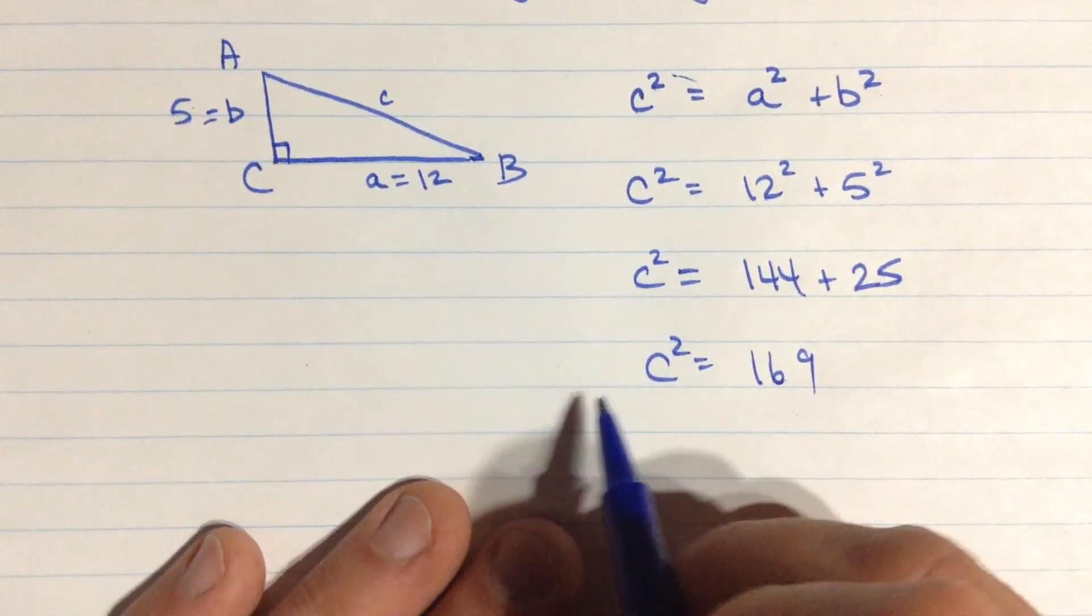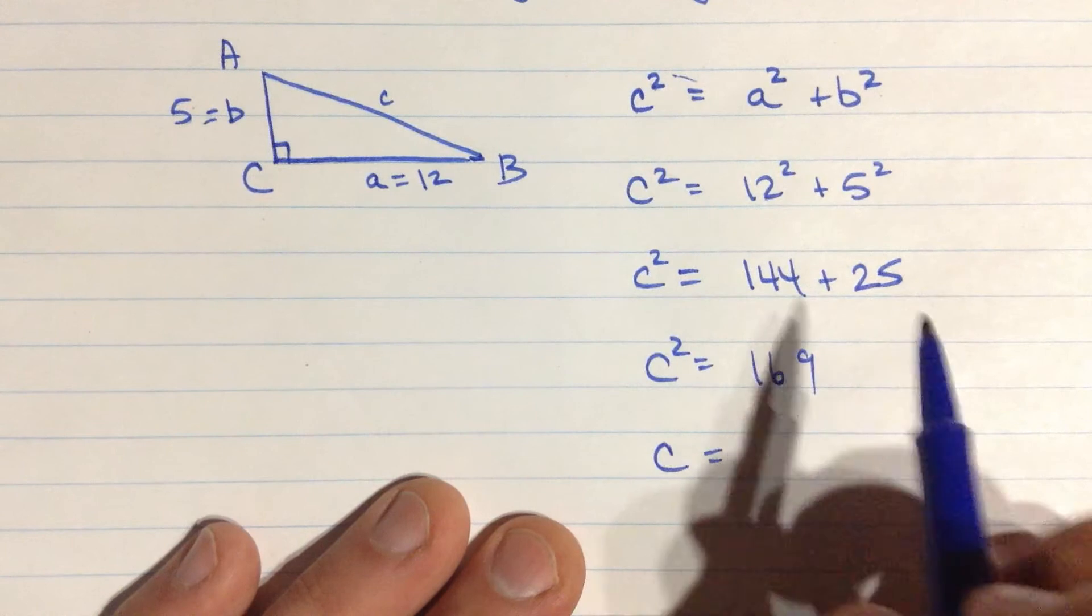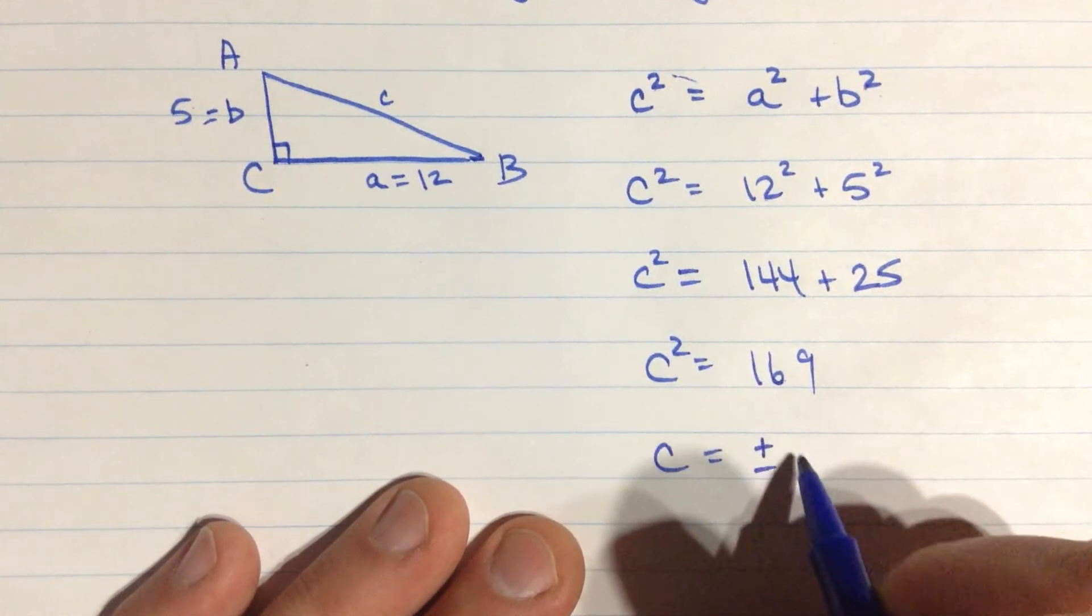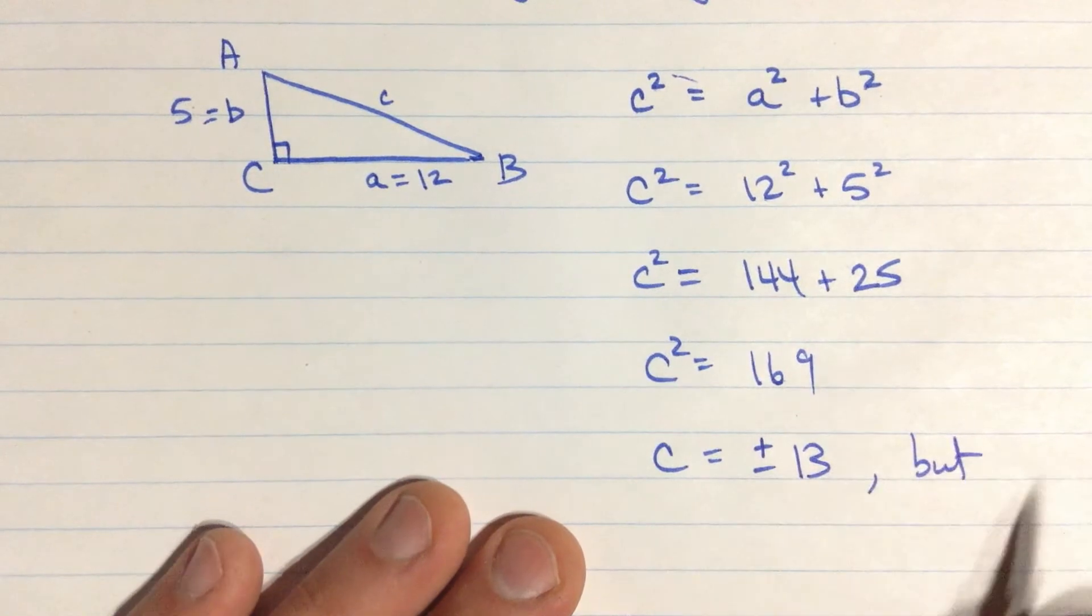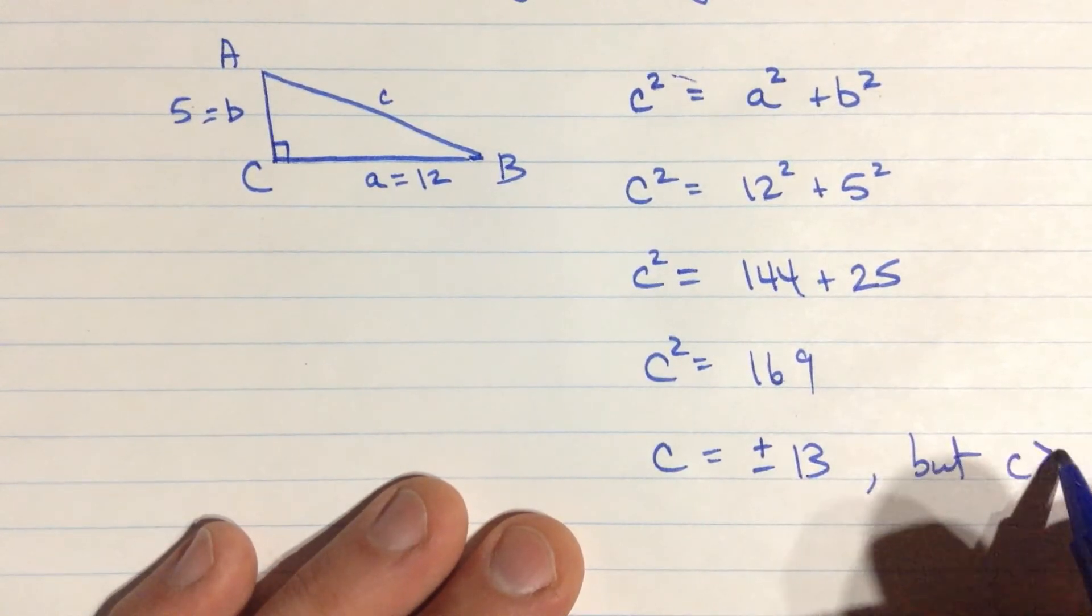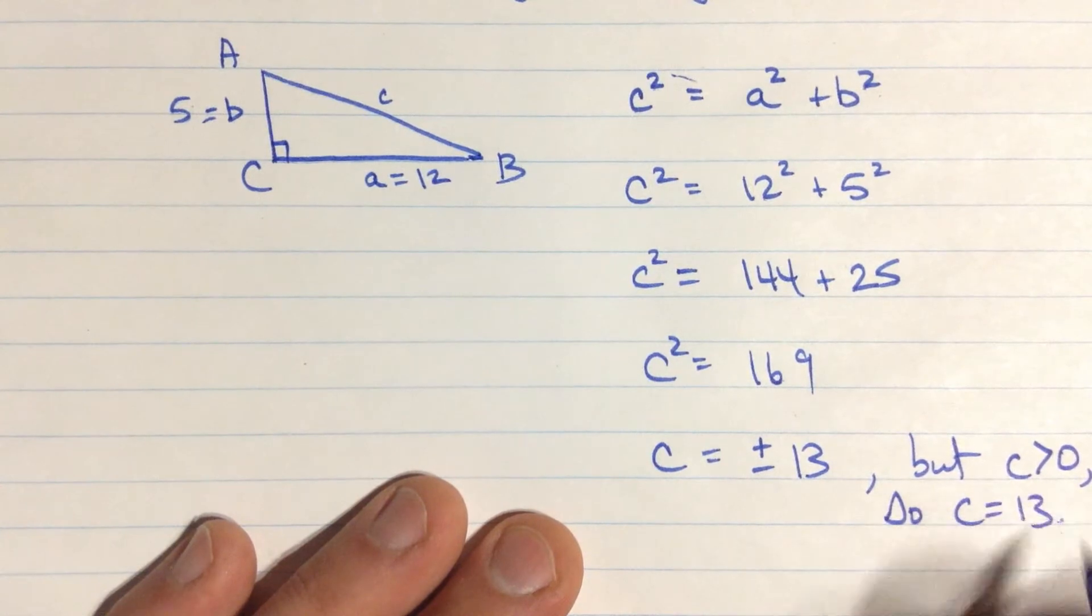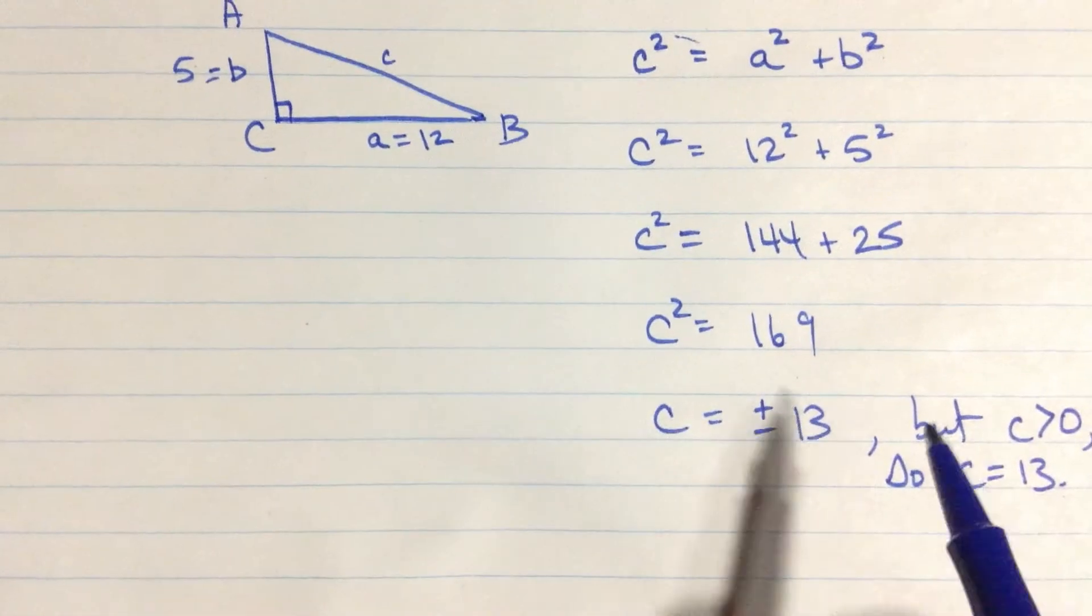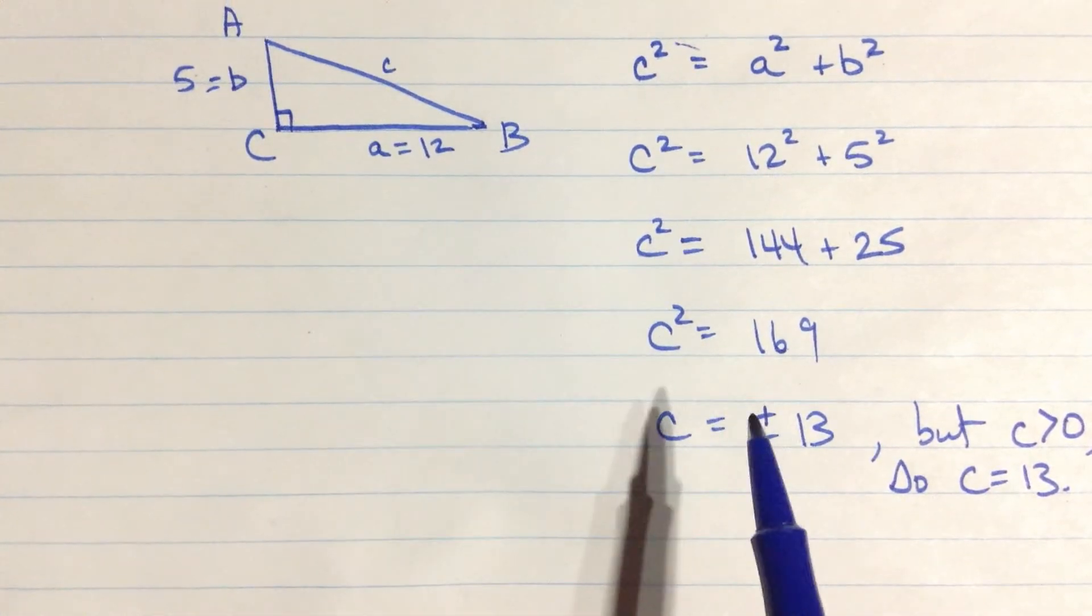Okay, now if I take the square root of both sides, I get that c is equal to, I'm going to write it like this to begin with, plus or minus, the square root of this is 13. But, we know that c has to be a positive number. So c is equal to positive 13. And so generally, we kind of leave this step out here, the plus or minus bit, because we know we want a positive number.